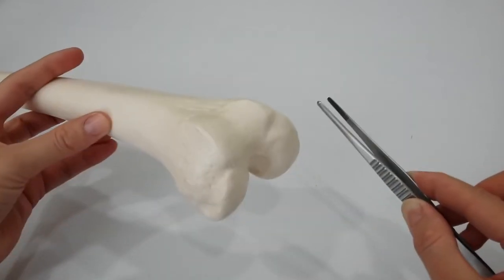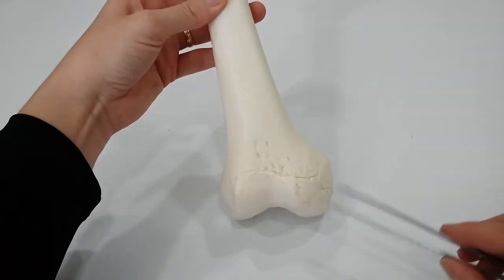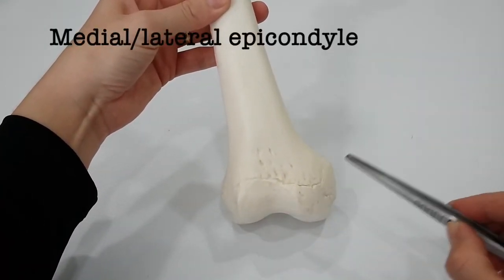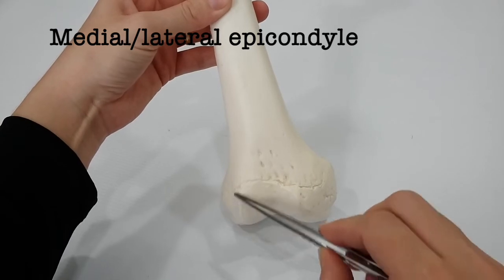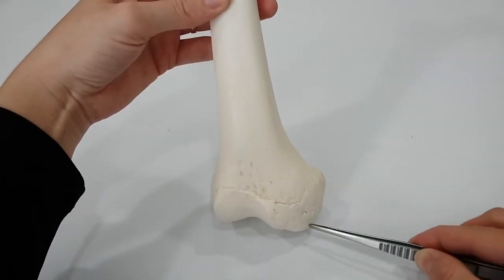The two condyles take part in the formation of the knee joint. Above the condyles are the medial and lateral epicondyles. The adductor tubercle is continuous with the medial epicondyle.